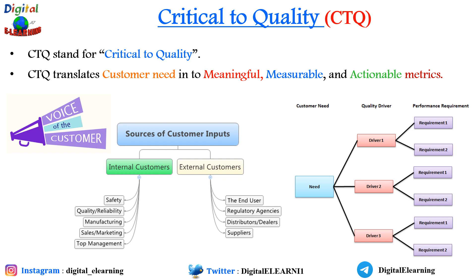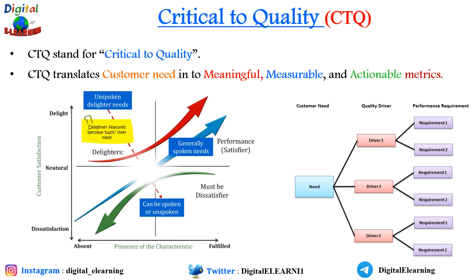Simply go and ask your customer what their needs are. You can use surveys, interviews, or the Kano model. The Kano model basically organizes customer CTQs into three categories: must-be, performance requirements, and delighters. It is best to define these needs in broad terms. The Kano model will help ensure you don't miss anything important and will help identify product features that delight your customers.